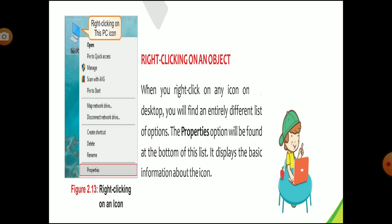Now you can see right-clicking on an object. When you right-click on any icon on the desktop, you will find an entirely different list of options — your property box is completely different from clicking on a blank area. In this case, you can see the properties option at the bottom. It displays the basic information about the icon, like when you created it and what size it is, what type of icon it is.